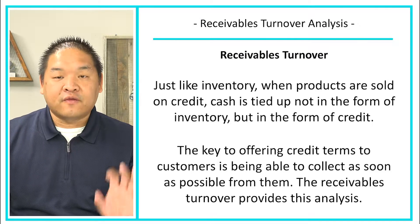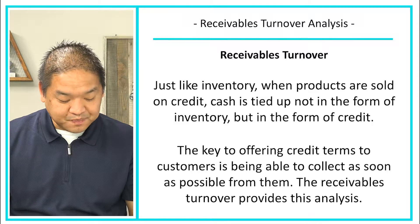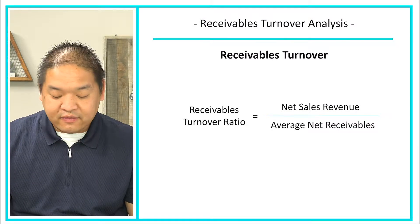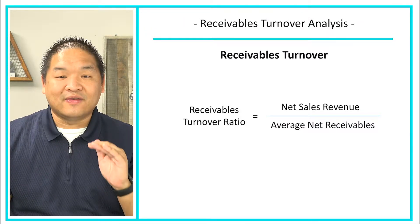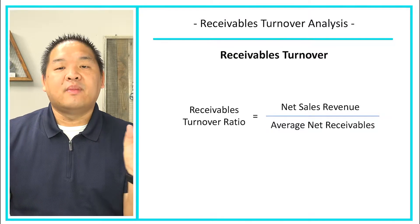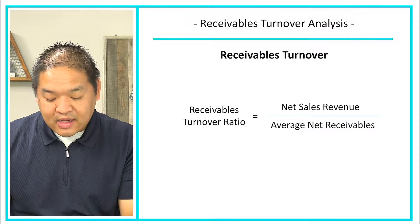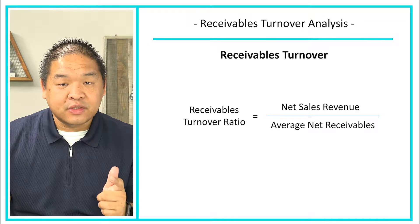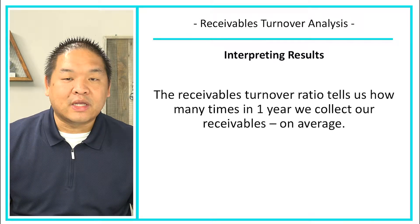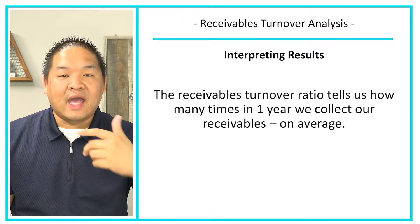The key to offering credit terms to our customers is being able to collect as soon as possible from them. The receivable turnover analysis provides us an understanding of how fast we are collecting from our customers. The formula is: net sales revenue divided by average net receivables. Net sales revenue is after all discounts and returns. Average net receivables is beginning net receivables plus ending receivables divided by two — just like inventory, beginning plus end divided by two. This ratio tells us how many times in one year we collect all of our receivables, on average.